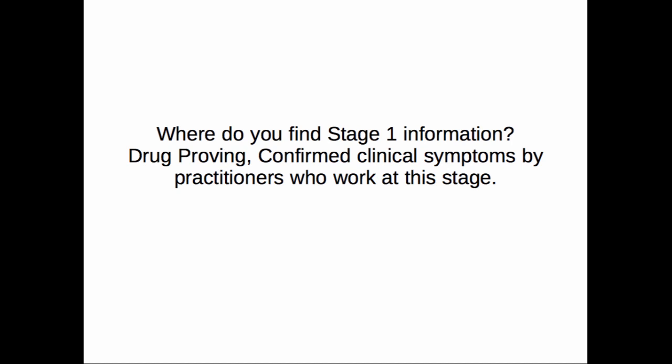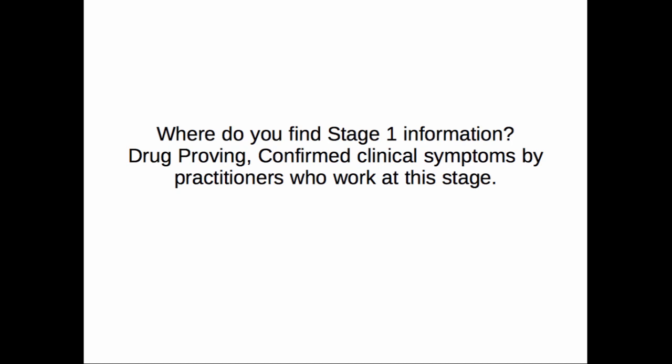Where do you find Stage 1 information? You can find diagnostic symptoms in the drug provings, which are functional. You can then confirm them with clinical symptoms or clinical patterns — diagnoses that the remedy can resolve — as confirmed by practitioners who work at this stage. In certain cases you can find it in toxicological rubrics, basically forensic information about that remedy in crude form. Practitioners like Compton Burnett, Borger, and Clarke are all Stage 1 practitioners who use remedies in that form.